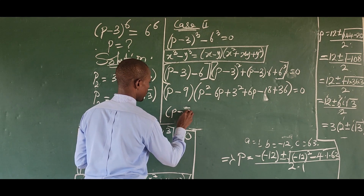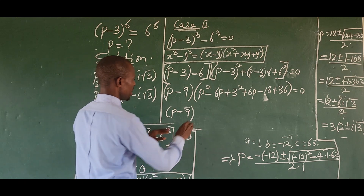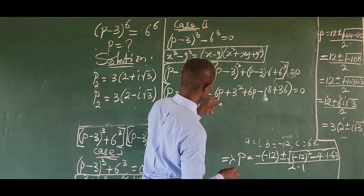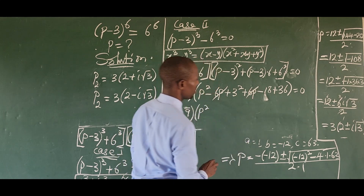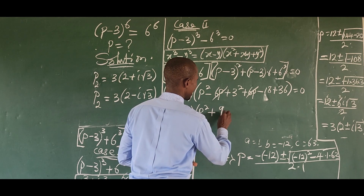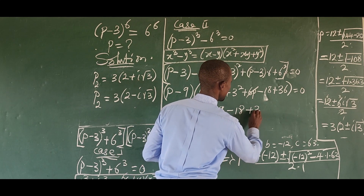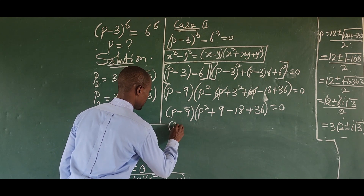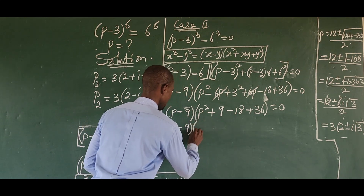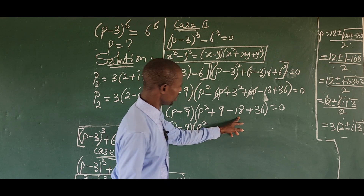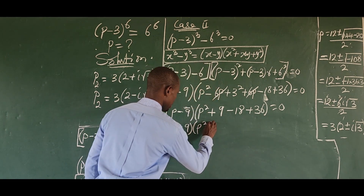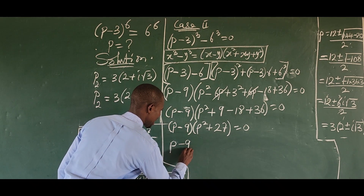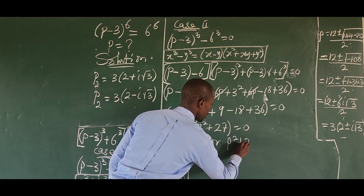Continuing to simplify case two: bracket p minus nine, times bracket p squared plus nine minus eighteen plus thirty-six equals zero. Collecting terms: bracket p minus nine times bracket p squared plus twenty-seven equals zero. Applying the zero product rule: p minus nine equals zero, giving p₄ equals nine, or p squared plus twenty-seven equals zero.